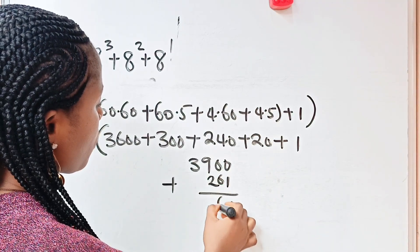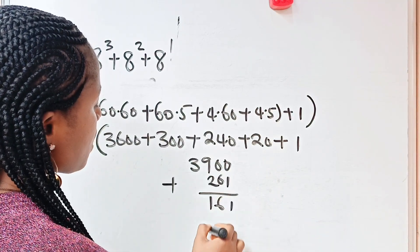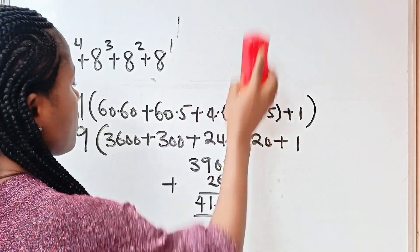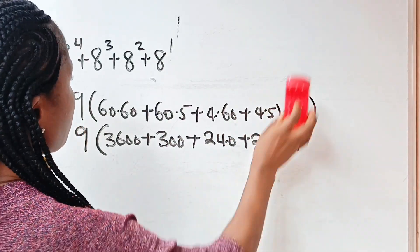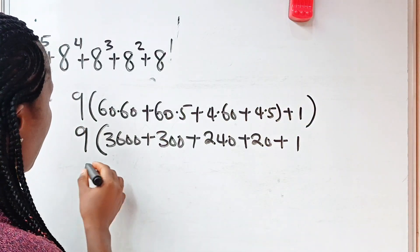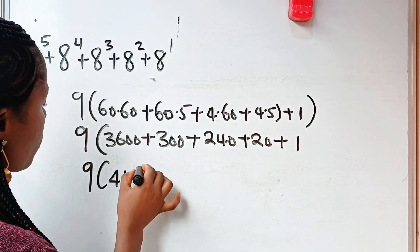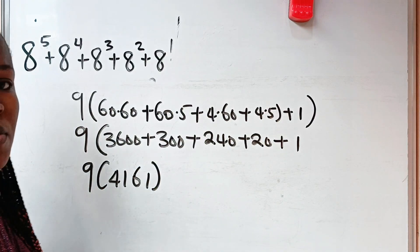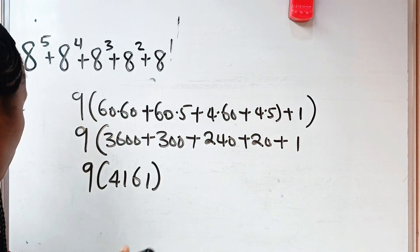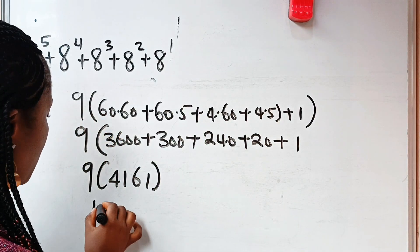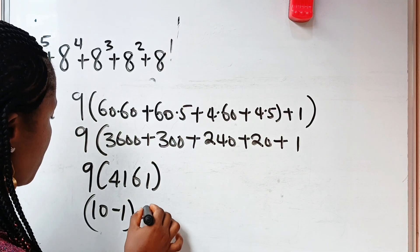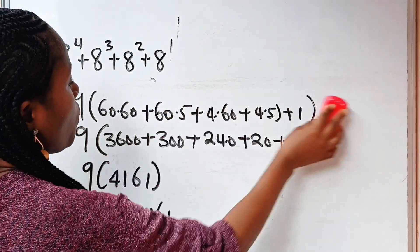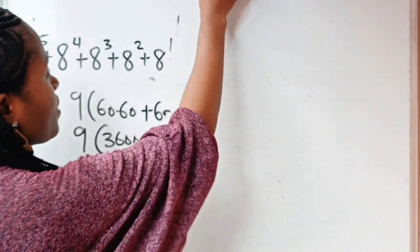So let's add: we have 1, 6, 11 carry 1, so we get 4,161. So we have 9 times 4,161. Now, 9 can be expressed as 10 minus 1. So we have 10 minus 1, multiplied by 4,161. This is interesting for the fact that we are doing this without the use of a calculator.